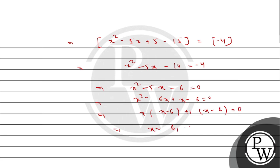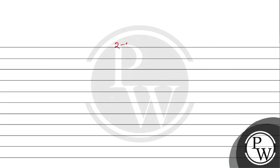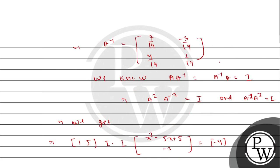Factorizing x²-6x+x-6 equals 0, we get x(x-6)+1(x-6) equals 0, giving roots alpha and beta from the factored form.